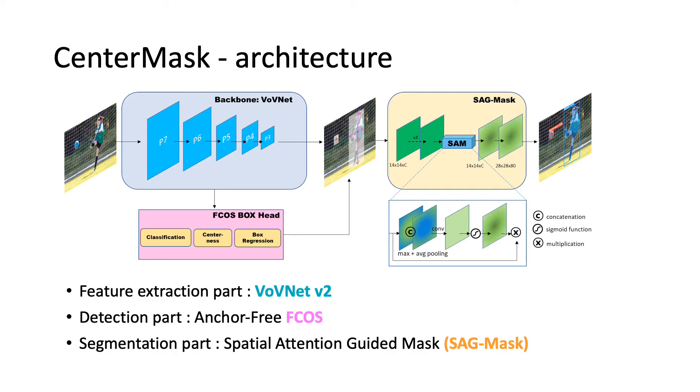CenterMask consists of the proposed BobNet for feature extraction, an anchor-free object detector, and a spatial attention-guided mask.